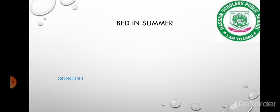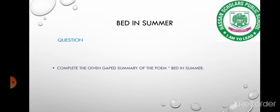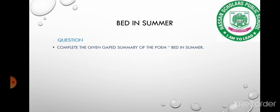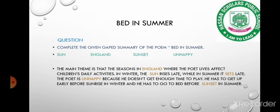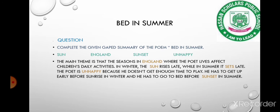Here is our question: complete the given gap summary of the poem 'Bed in Summer.' Here are the words we will use in the blanks: sun, inclined, sunset, and unhappy. I have solved it for you. The main theme is that the seasons in England, where the poet lived, affect children's daily activities.